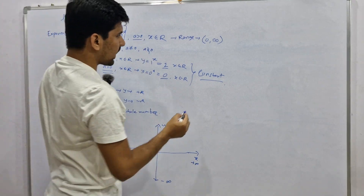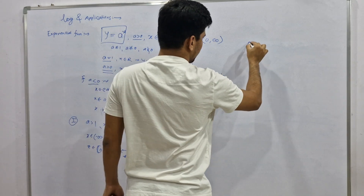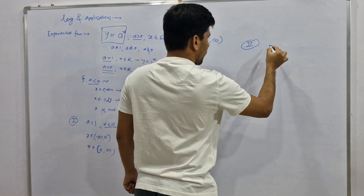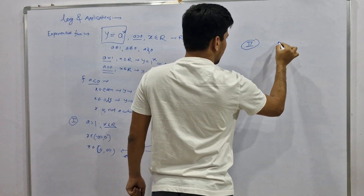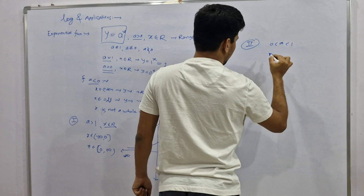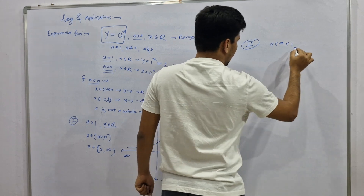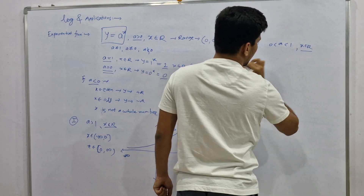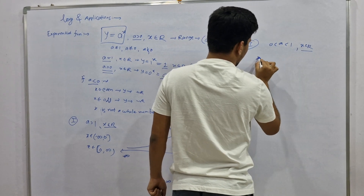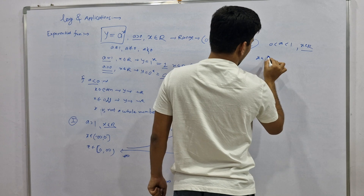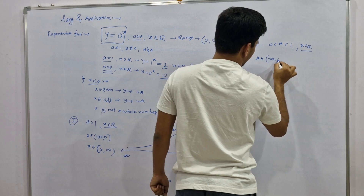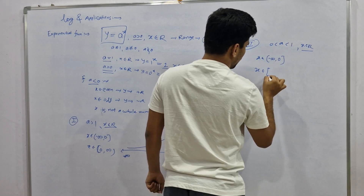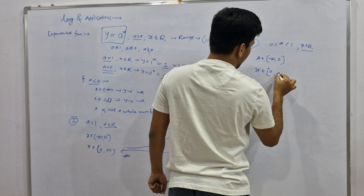Now the second case: a is between zero and one, and x belongs to R. We split that range into two parts: x belongs to minus infinity to zero, and x belongs to zero to infinity.